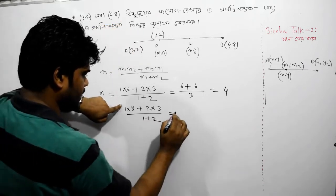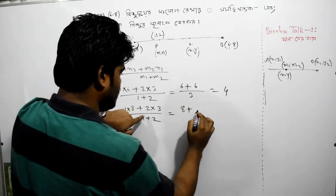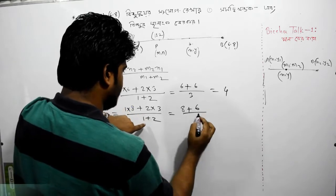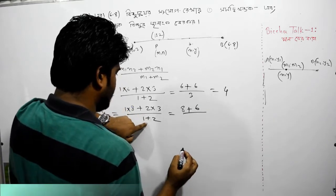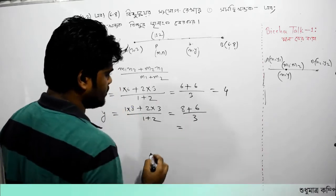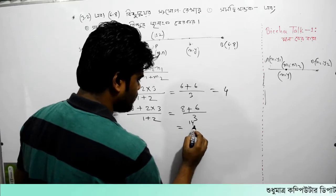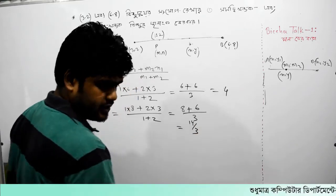Chalene calculation kori — eta 8 plus 3, 2, 6 divided by 2 e rake 3. Tala 800 kato hai — 14 divided by 3.